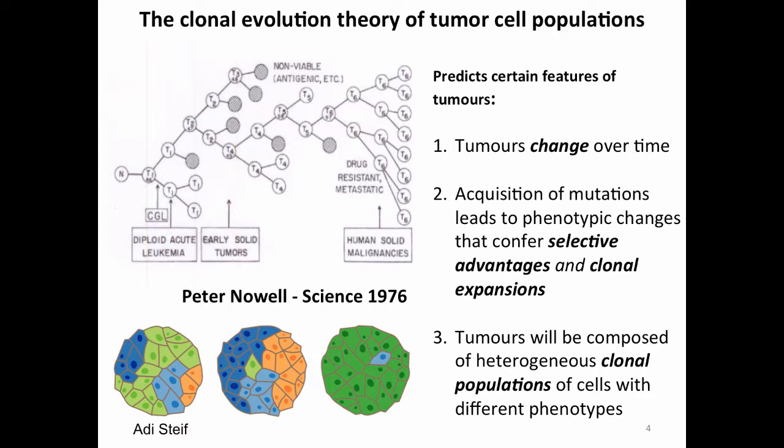The bottom line is that tumors will be composed of heterogeneous clonal populations. To make sense of sequencing a bulk tumor, one cannot ignore this fact. In many cases, considering the population structure helps interpret the biology of the sample under study.